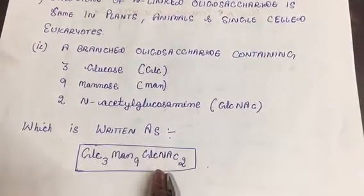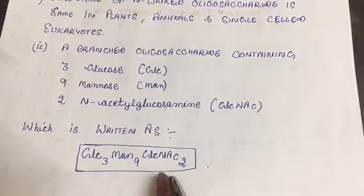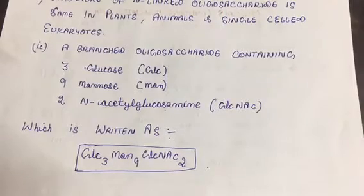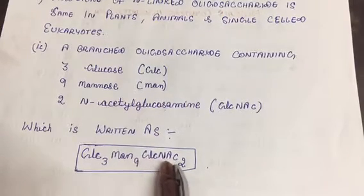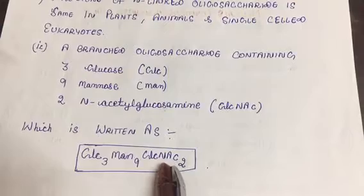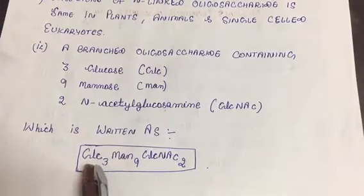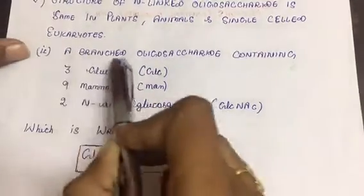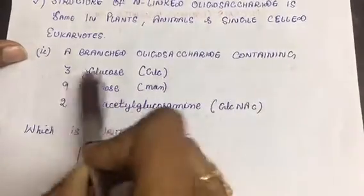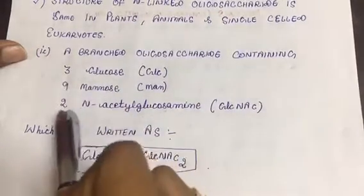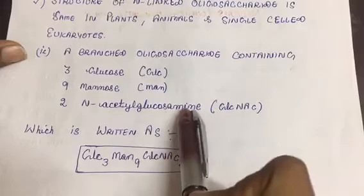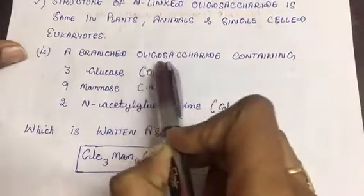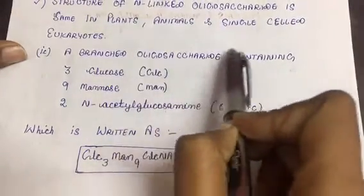The first thing which is getting attached onto the dolichol phosphate is N-acetylglucosamine, then later on mannose and then glucose. A branched oligosaccharide containing three glucose, nine mannose, and two N-acetylglucosamine. I hope you all are familiar with this term oligosaccharide.